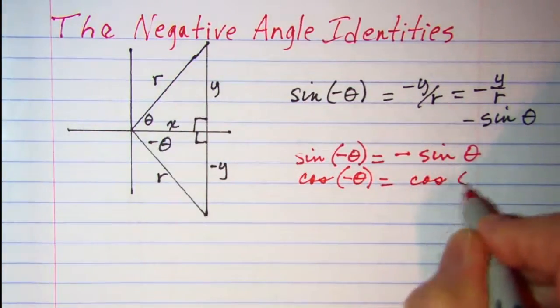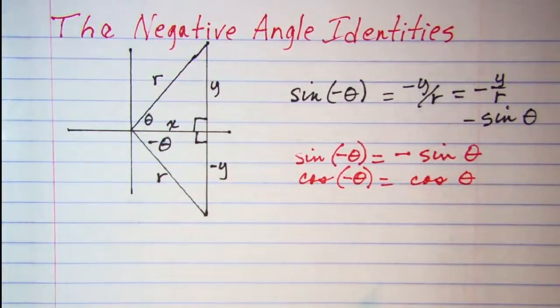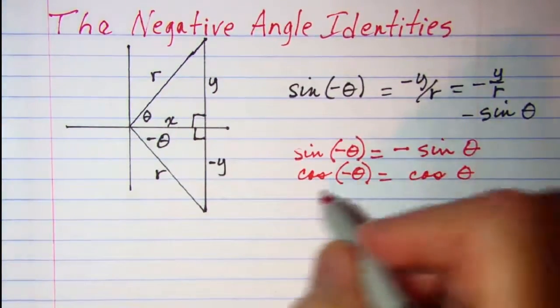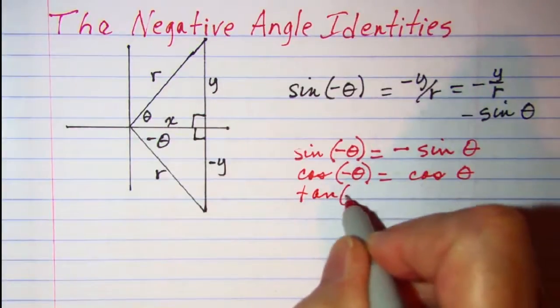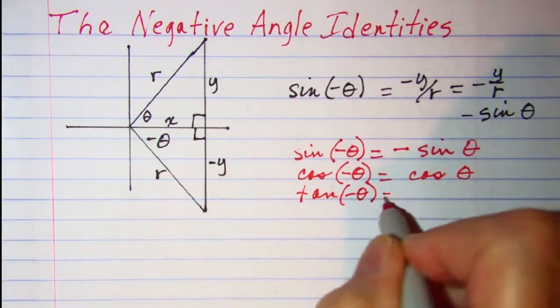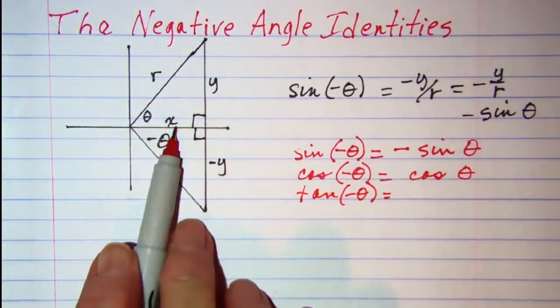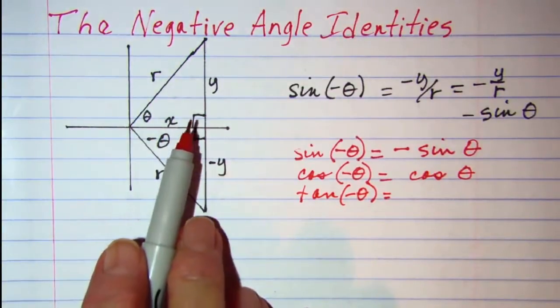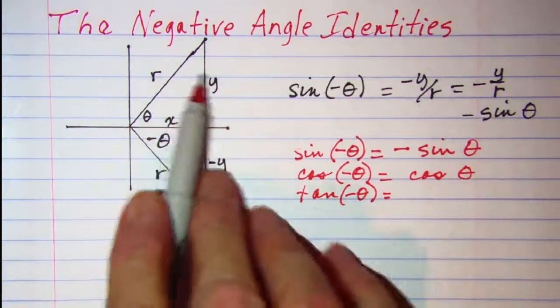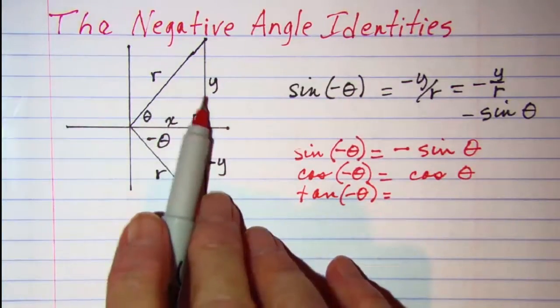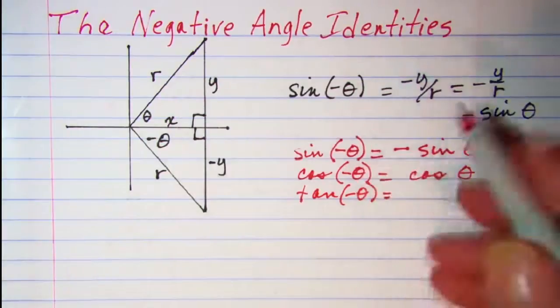Now the tangent of negative theta is negative y over x, and so that's going to be the negative of the tangent of theta, which is y over x.